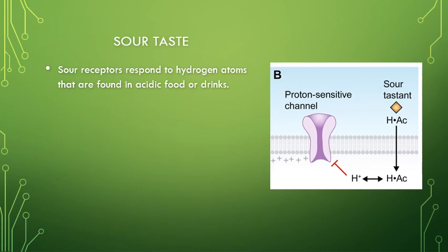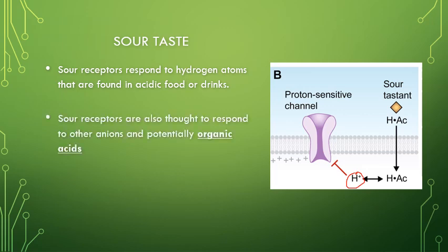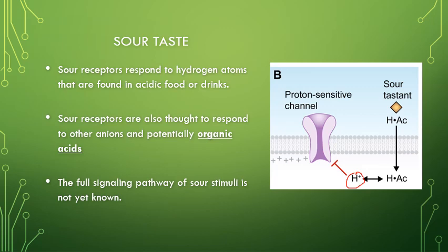For sour taste, the receptor appears to be activated by hydrogen atoms. We don't fully understand the complete pathway, but we believe the receptors respond to organic acids that make up sour tastants. The various components of sour taste must somehow be converted to these hydrogen atoms to trigger the receptor.